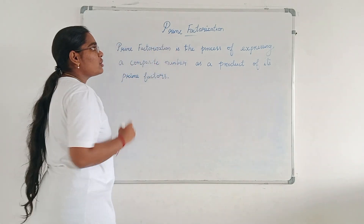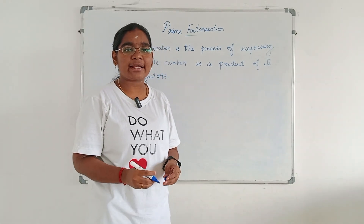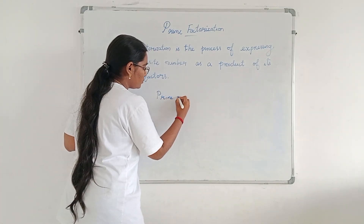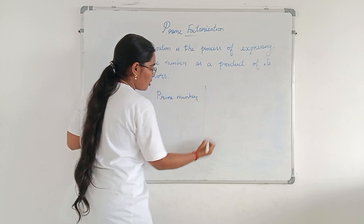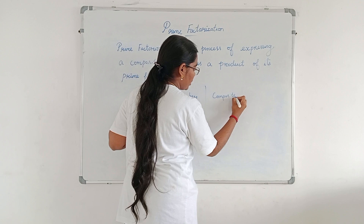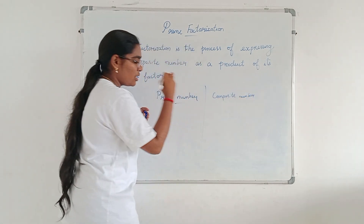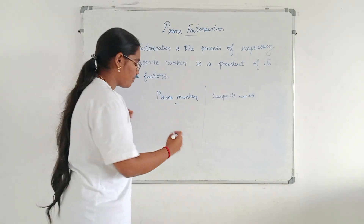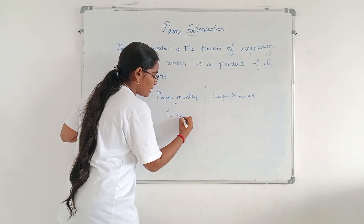Before learning this concept, first of all, we should have an idea of what is meant by a prime number and what is meant by a composite number. In general, a prime number has only two factors: one and the number itself.